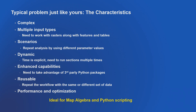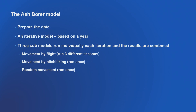It's a perfect example for map algebra and Python. We're going to break the model into parts: first prepare the data, then it's iterative — one year feeds into the next. We'll have three different models: one for flight, one for hitchhiking, and one for random movement.